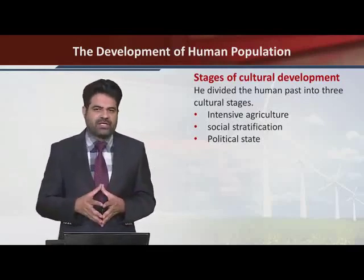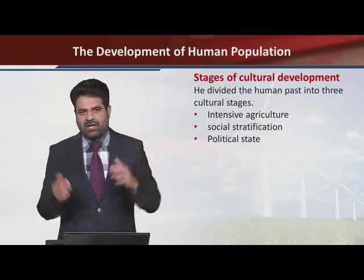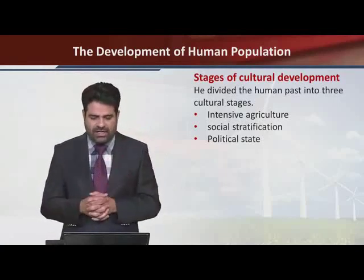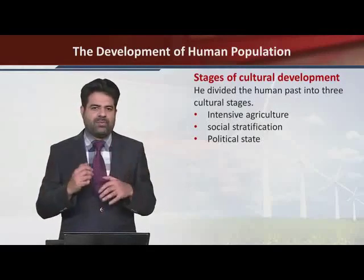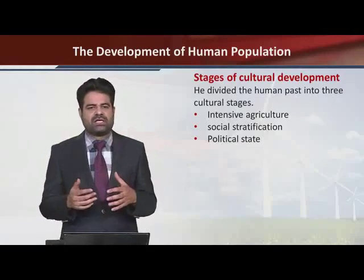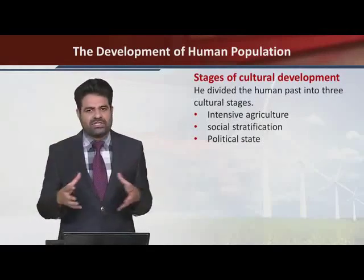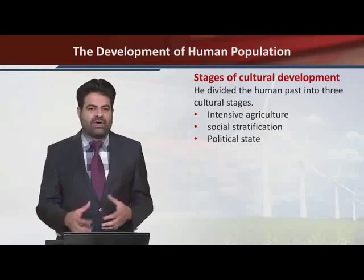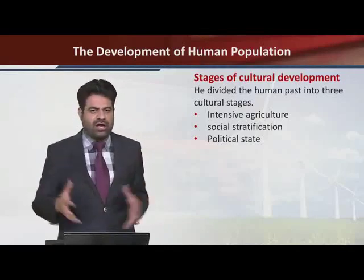Social stratification — logon mein classes bani. Koi manager bana, koi worker bana, bureaucrat, police officer — the stratification in the society. The political state as well — ek khas boundary, political state mein rules, regulations, laws, law-abiding citizens, unke passports, national identity cards, police stations, the systems. They developed by their own will, and later on the procedures, the processes and the laws as well.